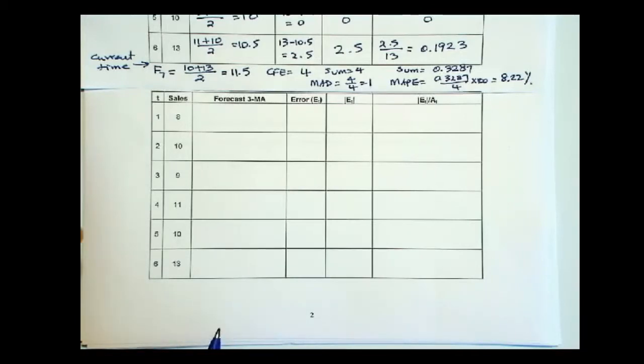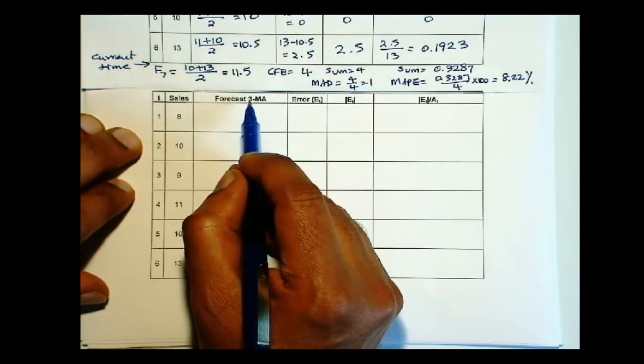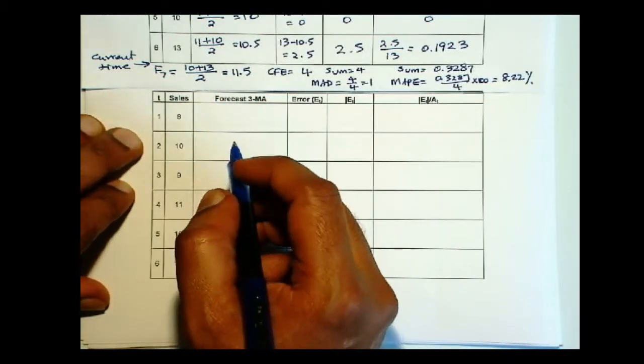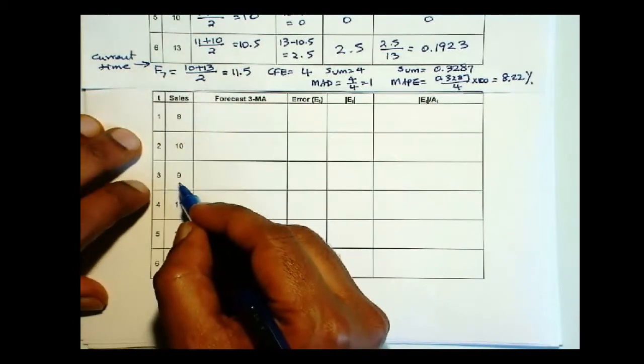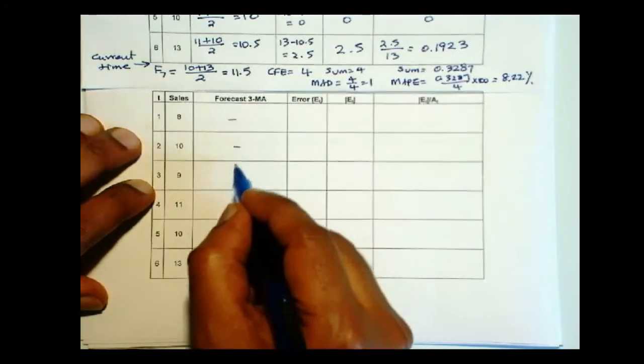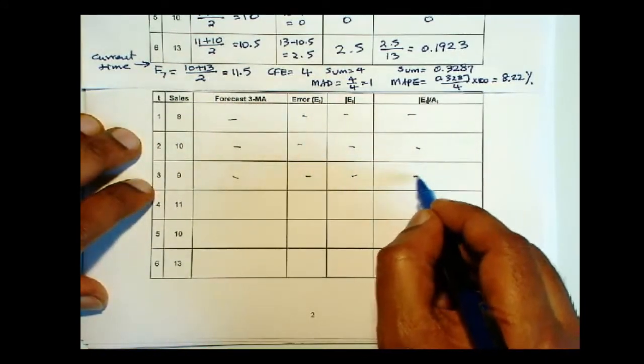Now let's look at 3 period moving average and then compare that to the 2 period moving average. 3 period moving average requires 3 full periods of data before we can compute a forecast. So first 3 rows need to be left blank.